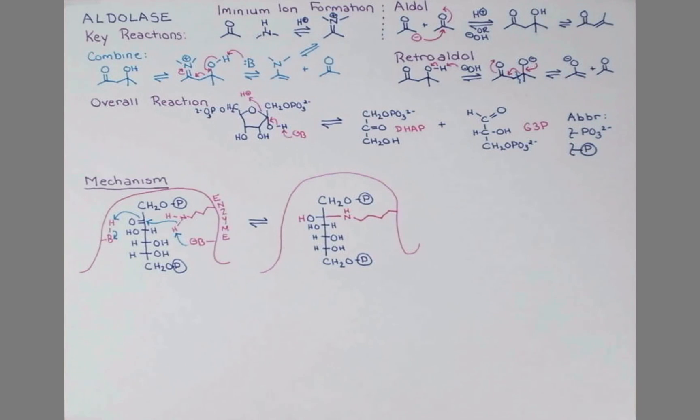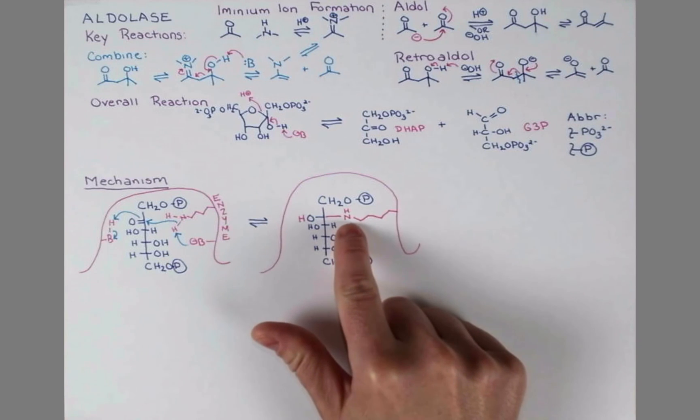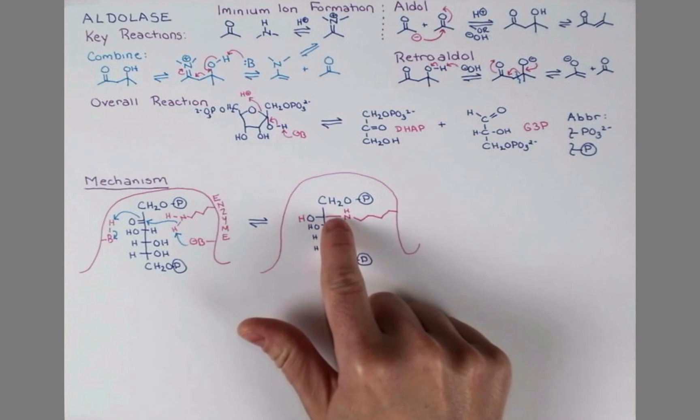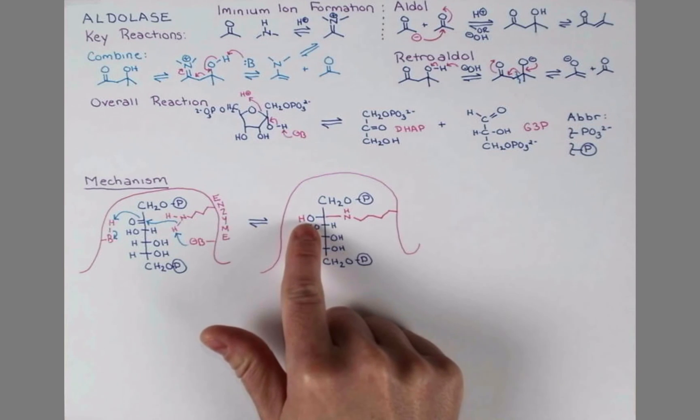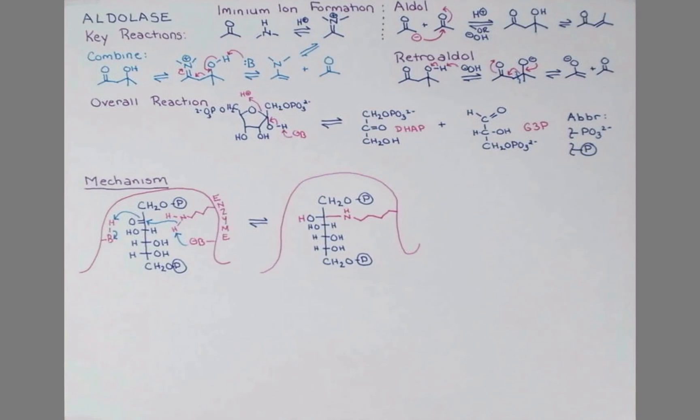Now we have this enzyme-bound intermediate bound in a covalent bond. The next step is iminium ion formation. The lone pair on this nitrogen will push in, and we'll show this OH grabbing a proton from a proton donor on the enzyme on its way out. The lone pair on nitrogen is going to form a double bond. The OH group is going to leave as water, grabbing that proton off of our enzyme.